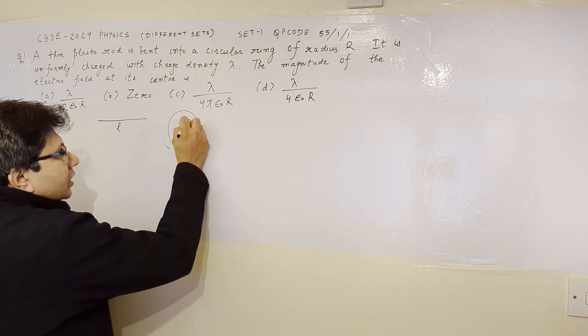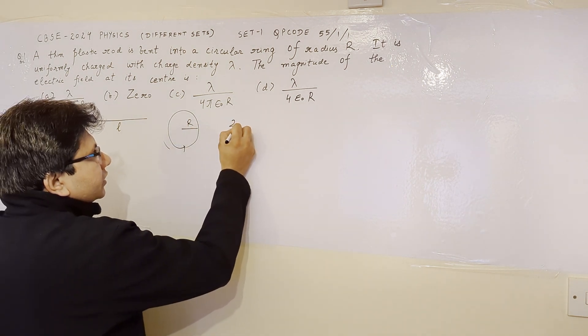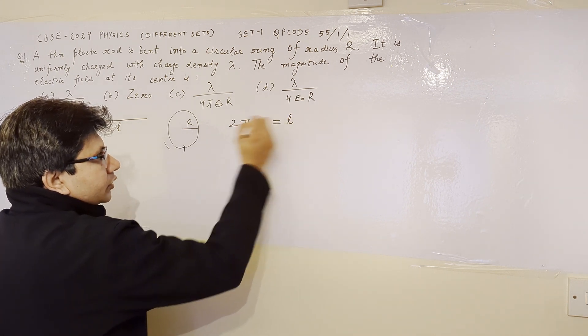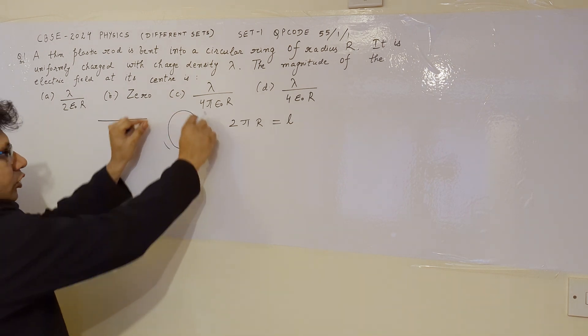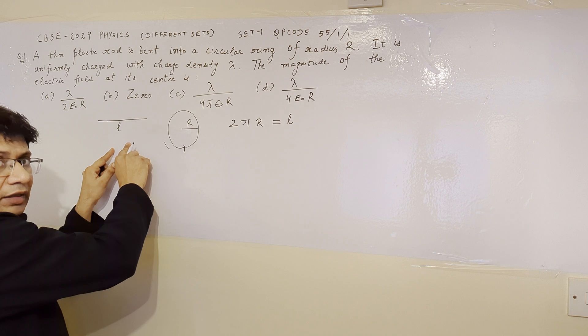Now the radius is given as capital R. So we know that the circumference is 2πr. So we can say that 2πr equals l because l is the length of the rod. It is bent in the shape of the circle, which means that the circumference 2πr is equal to l.